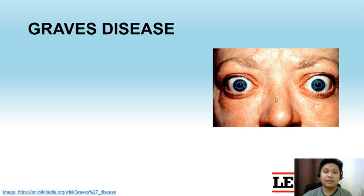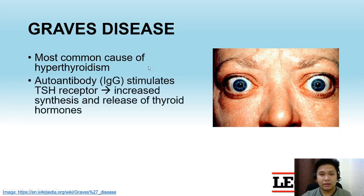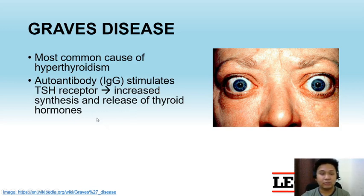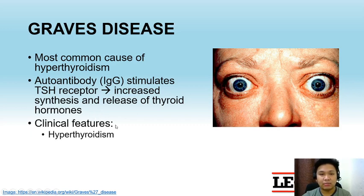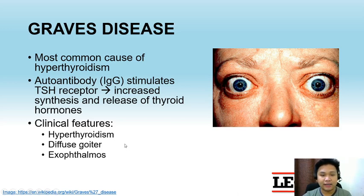Let's talk about some clinical conditions related to the thyroid gland. The first is Graves' disease, the most common cause of hyperthyroidism. It is an autoimmune disorder wherein there is autoantibody production. This autoantibody stimulates the TSH receptor, causing an increase in the synthesis and release of thyroid hormones. Clinical features include hyperthyroidism and its signs and symptoms, diffuse goiter or enlargement of the thyroid gland, exophthalmos or bulging of the eyes, and pretibial myxedema.